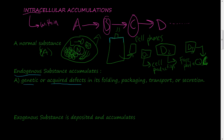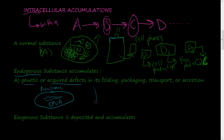Somehow the DNA got damaged, or there's an acquired defect. Let's say this is the cell with the nucleus containing the DNA. Somehow the DNA got damaged, or some organelle out here got damaged. So like department two got damaged, if you will - because the nucleus is department one, and this was department two, and department two got taken out somehow.